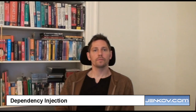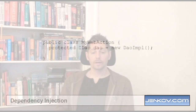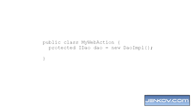Here is an example implementation of a web action called myWebAction. You can see the dependency here — the DAO input, which is an implementation of the iDAO interface. What you can also see is that myWebAction instantiates a DAO input itself, which means that it satisfies its own dependency. In other words, it configures itself.